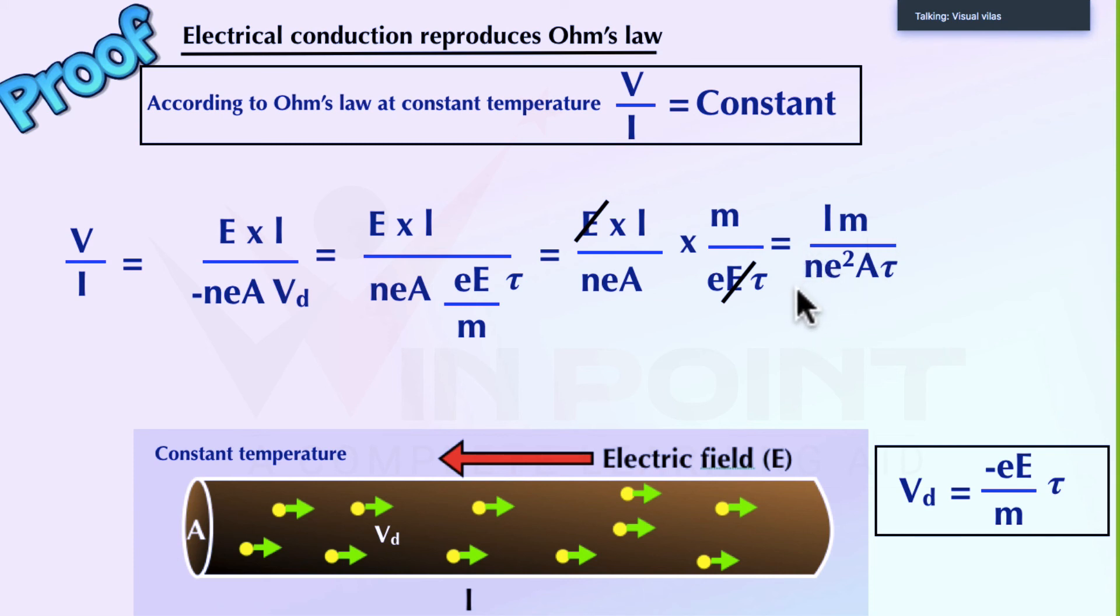E is charge of electron. That is constant. What is A? Area. Area of cross section is constant. What about τ relaxation time? The temperature is constant. So τ is not going to change. Relaxation time is also constant. So all the values, these all values are constant.